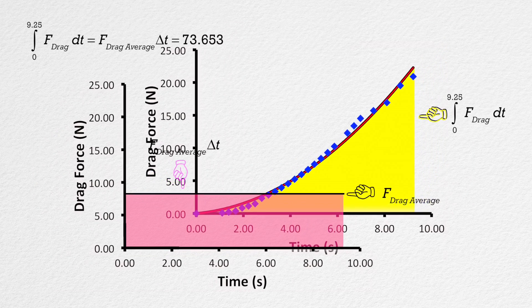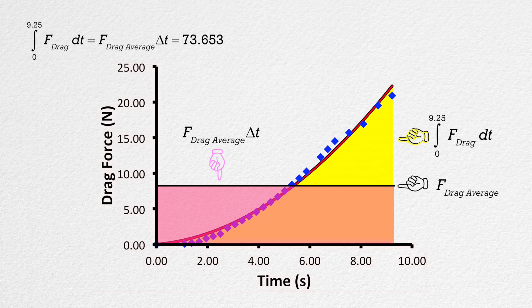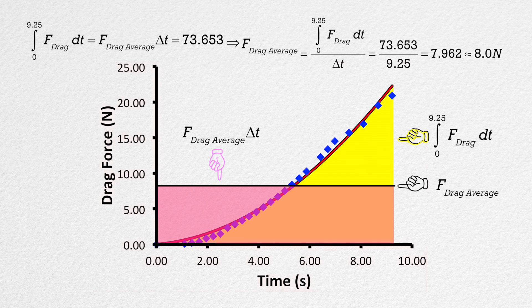Okay, going back to the equation. Dividing by change in time gives us the average force of drag equals the integral of the force of drag with respect to time, divided by change in time, or 73.653 divided by 9.25, which is 7.962, or 8.0 newtons, with two significant digits.